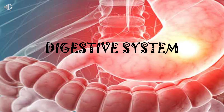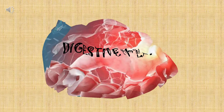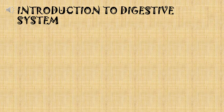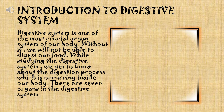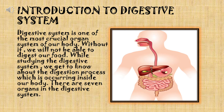Introduction to the Digestive System. The digestive system is one of the most crucial organ systems of our body. Without it, we will not be able to digest our food. While studying the digestive system, we get to know about the digestion process occurring inside our body. There are seven organs in the digestive system.